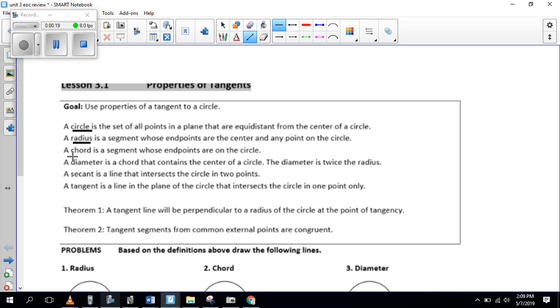But it goes over the word circle, radius, chord, diameter, secant, and tangent. And so I think I will draw some of these. So the radius we should know is half of the diameter. So that's the radius.